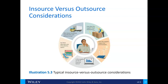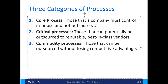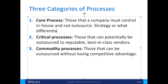Especially if going overseas, you'd want to make sure garbage is handled ethically and they're not employing child labor — that's the kind of thing shareholders get excited about. There are three categories of process types. A core process is something a company must control in-house and not outsource, as it relates to what differentiates the company. A critical process can potentially be outsourced to reputable, best-in-class vendors.